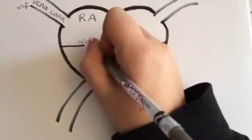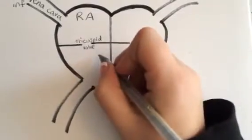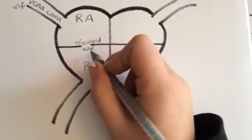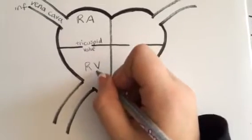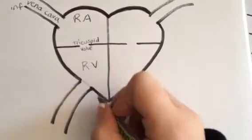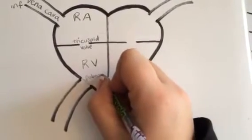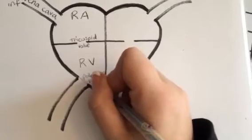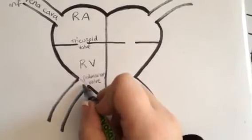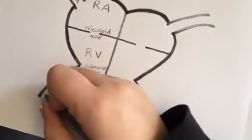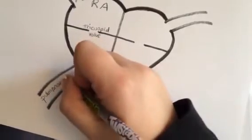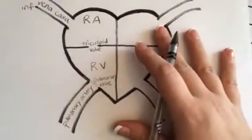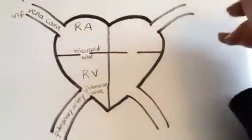Blood goes through the tricuspid valve into the right ventricle. Once it leaves this chamber it has to go through another valve — the pulmonary valve. After passing through the pulmonary valve, blood travels out through the pulmonary artery, heading toward the lungs.